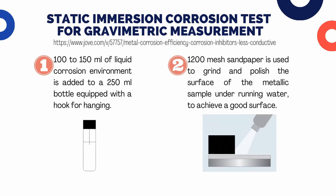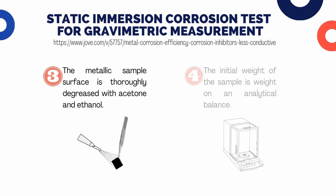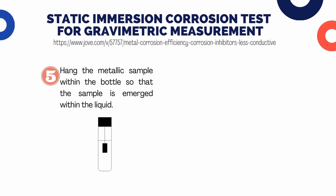To perform adjustment of the surfaces, use 200-mesh sandpaper to grind and polish the surface of the metallic sample under running water. Next, thoroughly degrease the sample surface with about 25 milliliters of acetone and about 25 milliliters of ethanol. After drying, weigh the sample on an analytical balance to an accuracy of four decimal places, and hang the metallic sample within the bottle so that the sample is submerged within the liquid but does not lie on the bottom. Then carefully seal the container to avoid liquid evaporation and air excess.